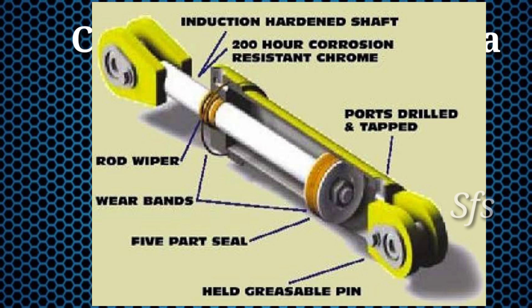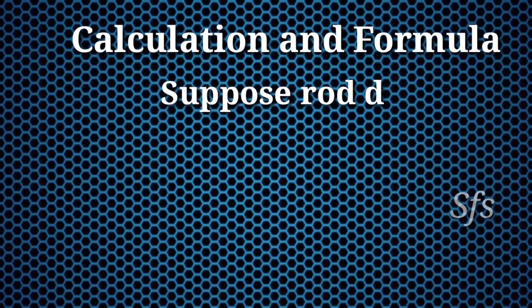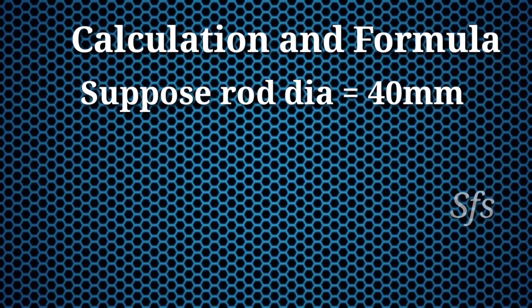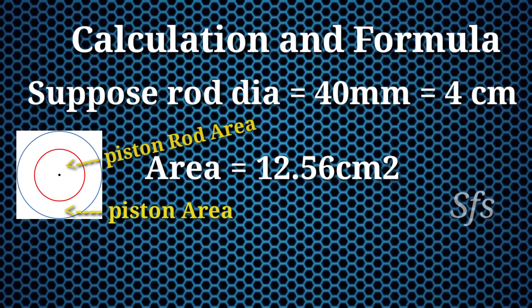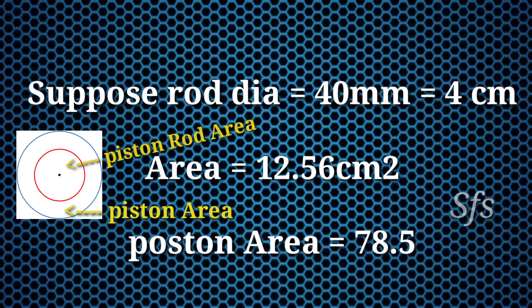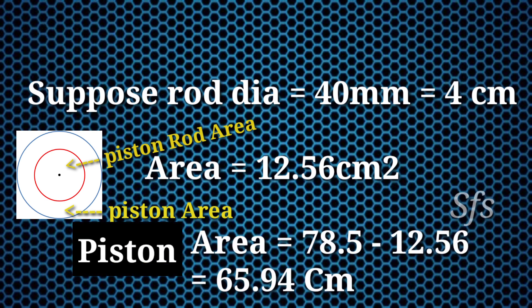This calculation is for forward direction of the piston, when the piston moves outside from the cylinder. But what happens when the piston moves inside the cylinder? Here, cross-section area is reduced because some area is occupied by the piston rod. Suppose piston rod diameter is 40 mm, which equals 4 cm.